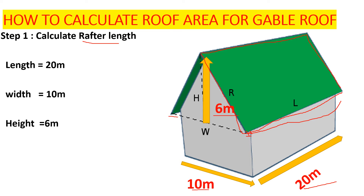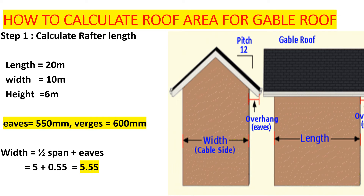We are going to take half the span and add the eave to get the new width, which will help us calculate the rafter length. Our eaves are 550 millimeters (0.55 m), and the overhang on the gable end is 600 millimeters. Our new width equals half the span plus the eaves: half of 10 meters is 5 meters, plus 0.55 meters gives us 5.55 meters. So from the ridge down to the eave tip is 5.55 meters.